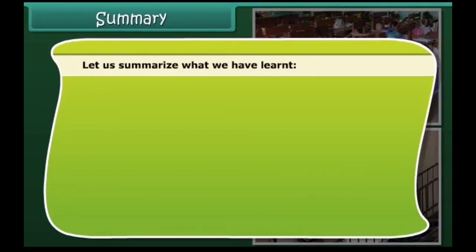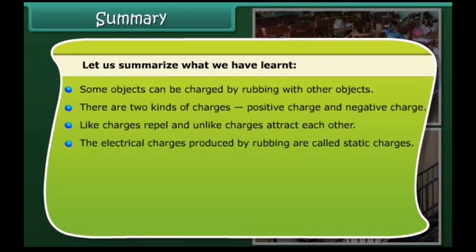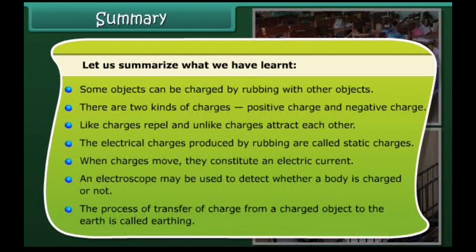Let us summarize what we have learned. Some objects can be charged by rubbing with other objects. There are two kinds of charges: positive charge and negative charge. Like charges repel and unlike charges attract each other. The electric charges produced by rubbing are called static charges. When charges move, they constitute an electric current. An electroscope may be used to detect whether a body is charged or not. The process of transfer of charge from a charged object to the earth is called earthing.